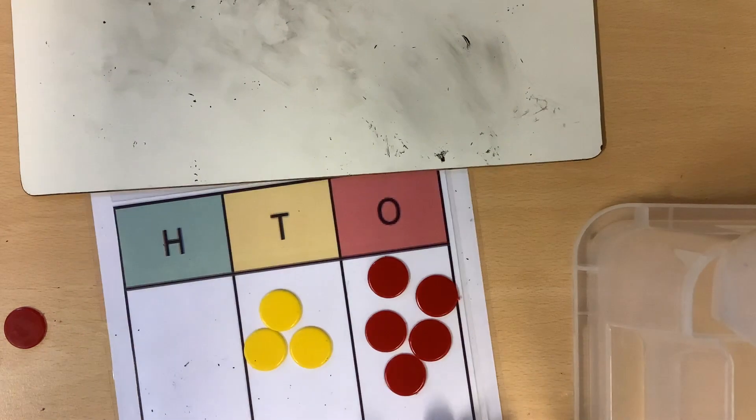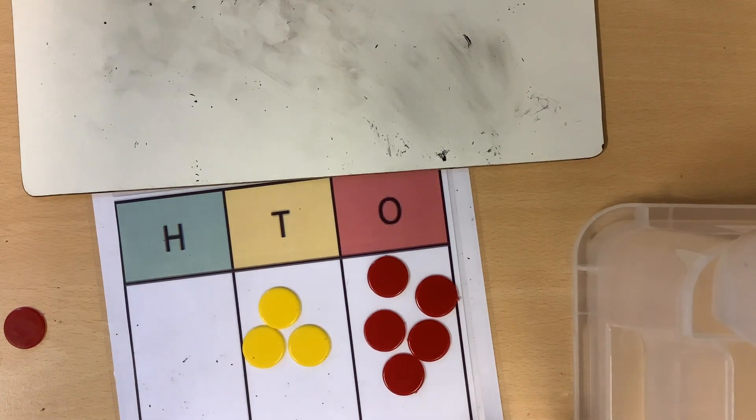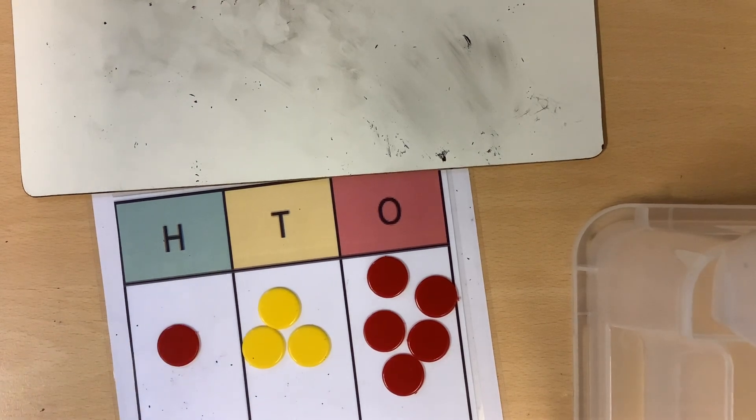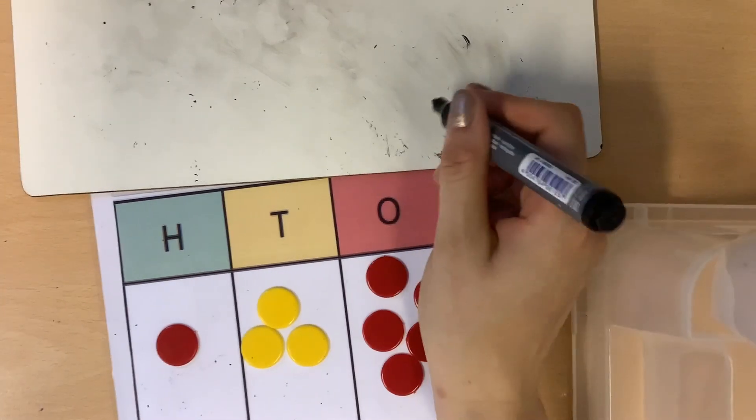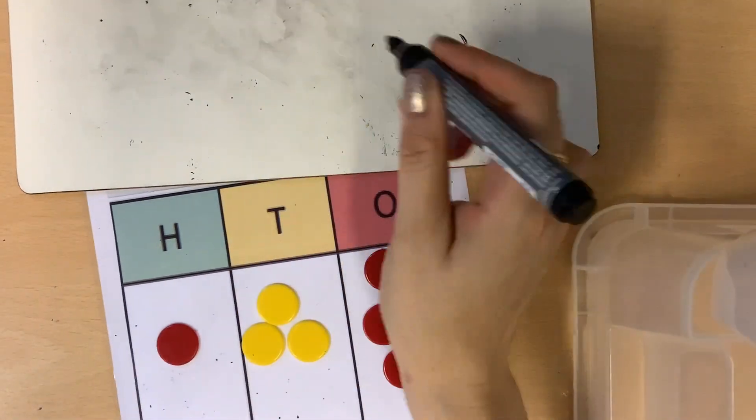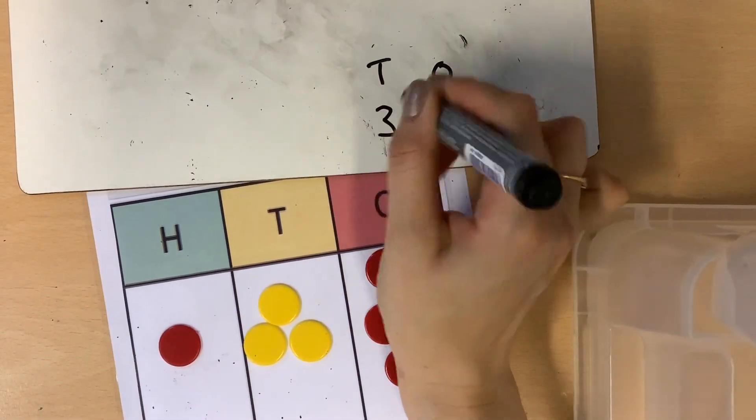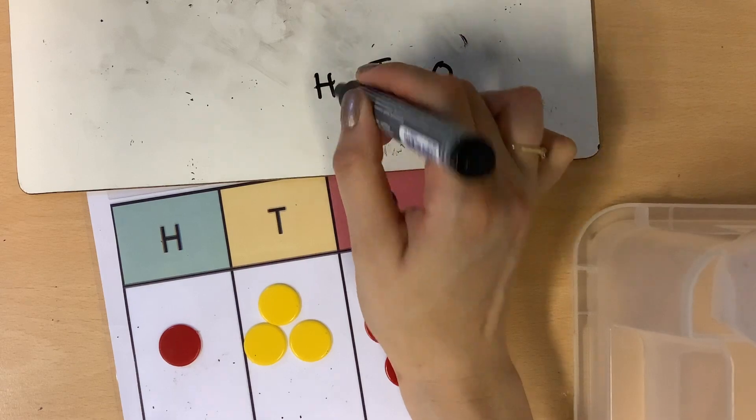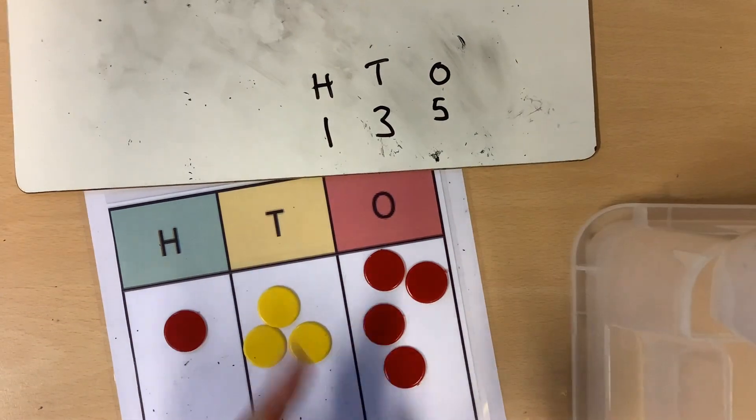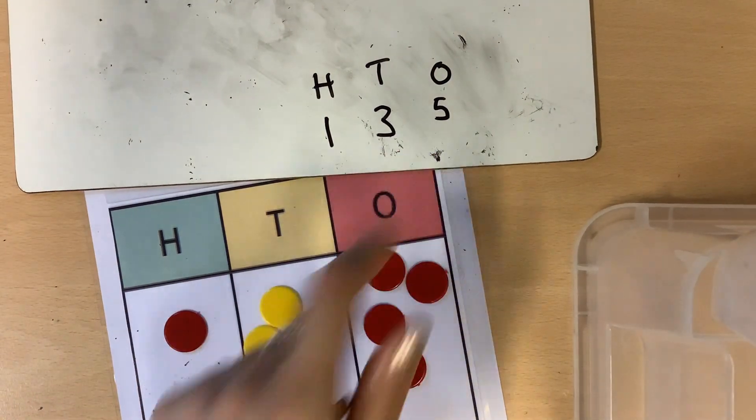You might even make a number using some hundreds. That's just one place value bigger. Same rules apply. How many ones? There are still 5. How many tens? There are still 3. And I can see there's only one lot 100 counter. One lot of 100. My number 137.